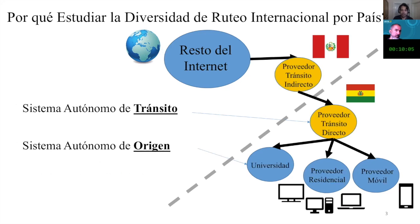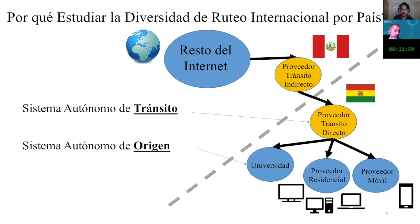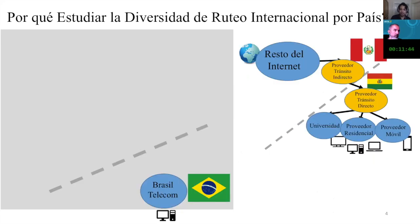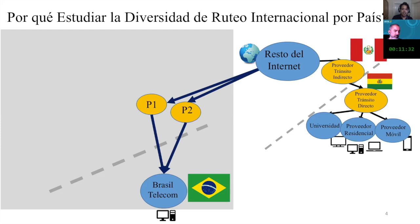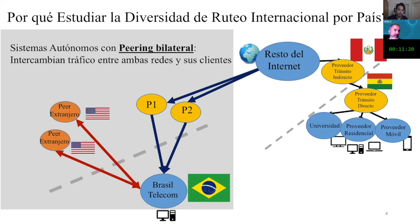In Bolivia, we see that these connections abroad are highly concentrated in one or two networks. In this case, an indirect transit provider in Peru, which is a neighboring country. The users in Bolivia may run the risk of being disrupted by third parties. Compare this with other networks in Brazil — Brazil Telecom — where users have a broader range of transit connectivity. That is a simplification of Bolivia, but doesn't differ so much from the real topology.